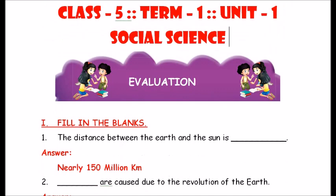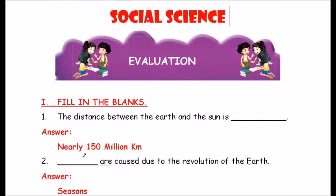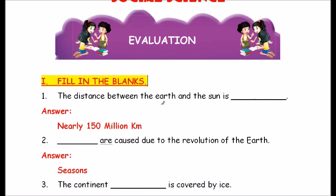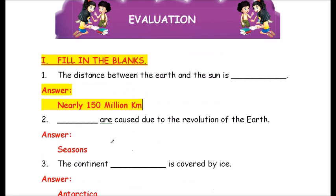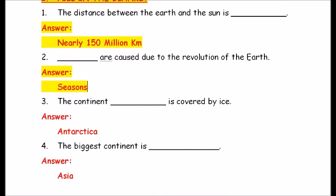Roman number 1 — Fill in the blanks. Question number 1: The distance between the Earth and the Sun is dash. The answer is nearly 150 million kilometers. Question number 2: Dash are caused due to the revolution of the Earth. The answer is Seasons — S E A S O N S.